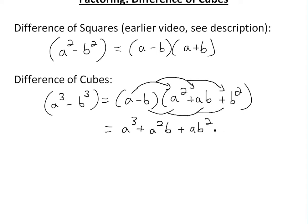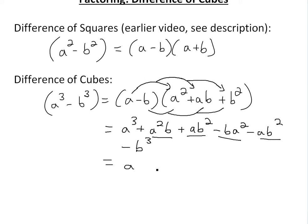See more on this in the FOIL method video link below. So now we're going to have b times a squared, and then minus ab squared. And the last one is going to be minus b cubed. As you can see, there's a plus a squared b and a negative a squared b — they cancel. And also this ab squared and ab squared have opposite signs — they cancel. So all we're left with is a cubed minus b cubed.